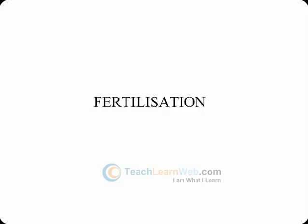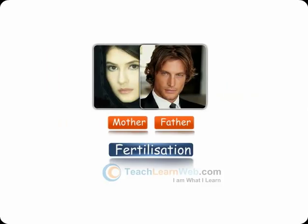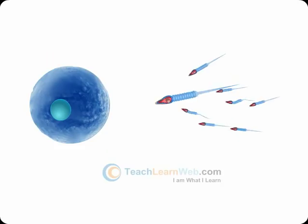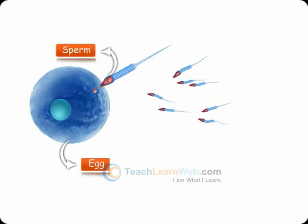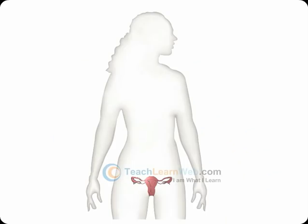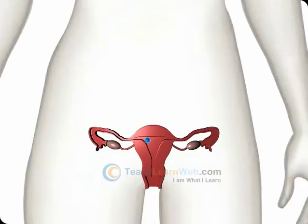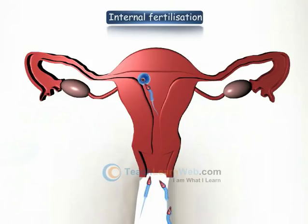Fertilization. It is the first step in the process of reproduction. Only one sperm fertilizes the ovum, during which the sperm and the egg fuse to form a single nucleus called a zygote. Fertilization takes place inside the female body and is called as internal fertilization.